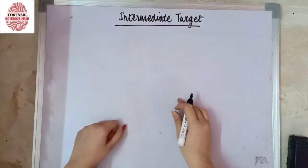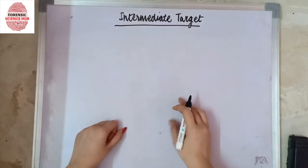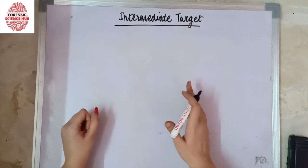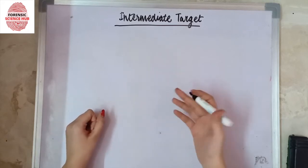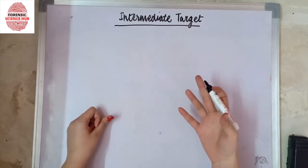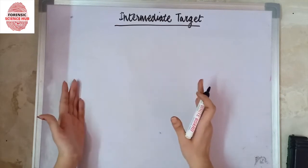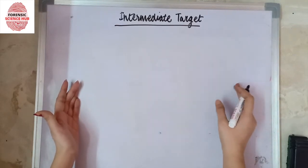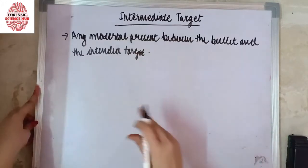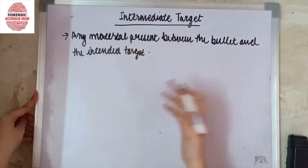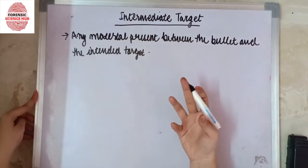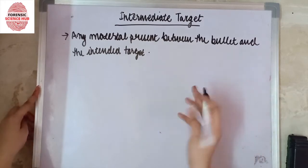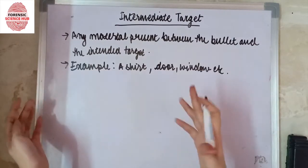In this video, I am going to discuss what an intermediate target is. An intermediate target can be defined as any material that is present in between the bullet and the main aim or the intended target. Examples can include anything — the cloth of a person, a door, a window, or anything similar.